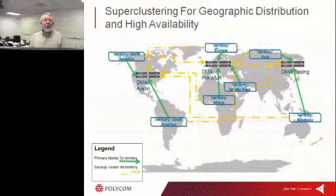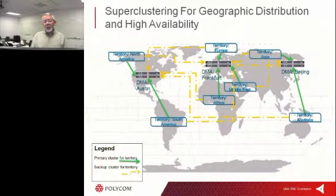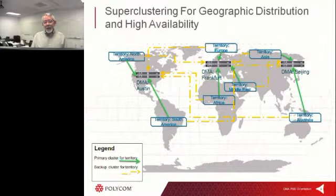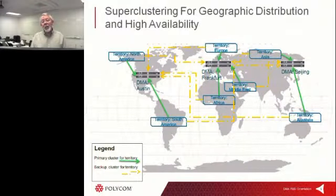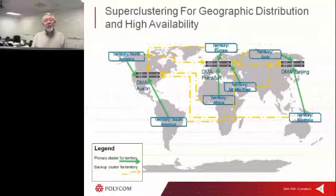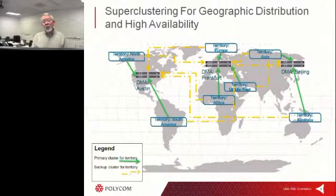Let's look at how superclustering and supernodes work together. Here we have geographically dispersed coverage across three areas: the Americas, Eastern Europe, and the Far East. In this case, all the calls for the Americas would be coming into Austin. Now if for some reason the Austin bridge were to go down, it is very likely that the DMA in Austin would select one of the bridges in Europe.